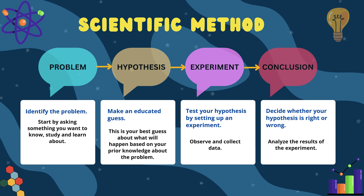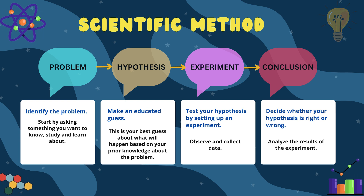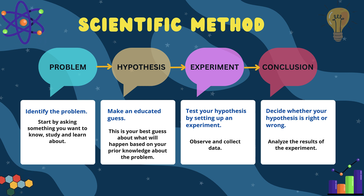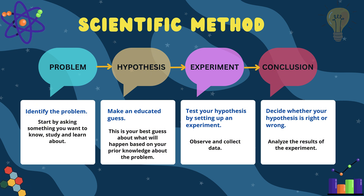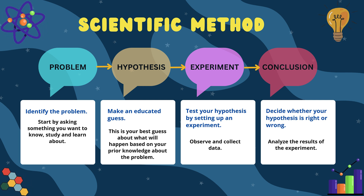Next, conduct an experiment. Test your hypothesis by setting up an experiment. For instance, you can water one plant with regular water and another with salt water, keeping everything else the same. Then, observe and collect data. Keep track of how the plants grow over time. You can take notes or draw pictures to show what you see, such as the height of the plants or the color of their leaves.